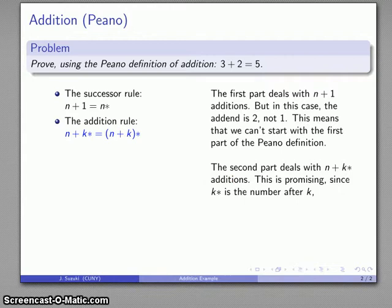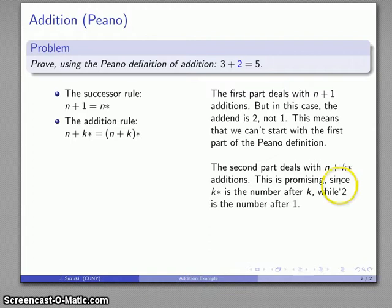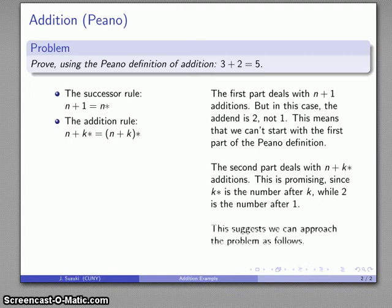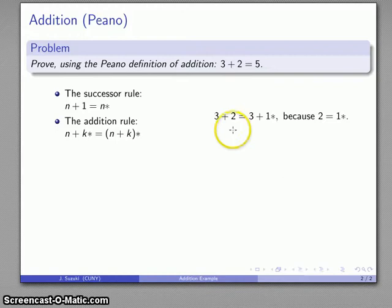The second part deals with n plus the successor of k. And this looks promising because k star is the number after k. And first of all, because there's only two parts to the Peano definition, I can't use the first part for this addition. I have to be able to use the second part. So let's see what we can do with that. And what makes it promising is 2 is the number after 1. So 2 is the successor of 1, otherwise known as 1 star. And so this suggests we can approach our problem as follows. First off, 3 plus 2 is the same as 3 plus 1 star, because 2 is the successor of 1. 2 is the number following 1.